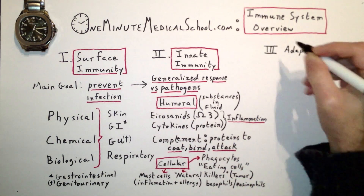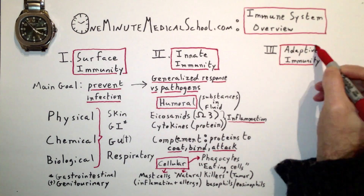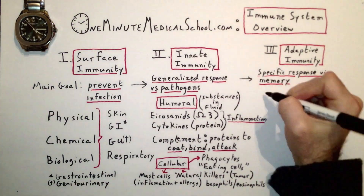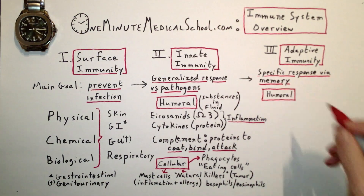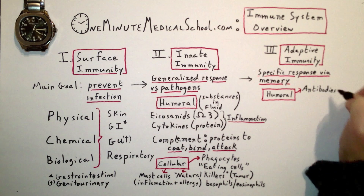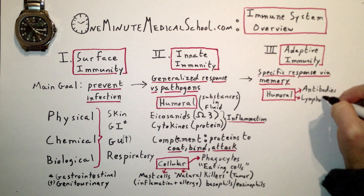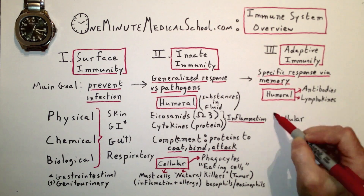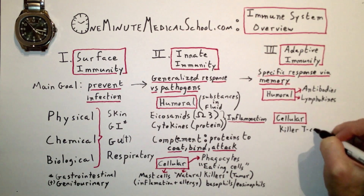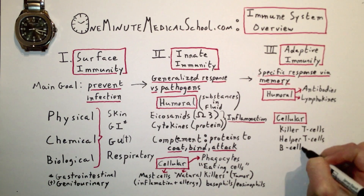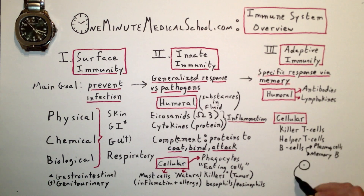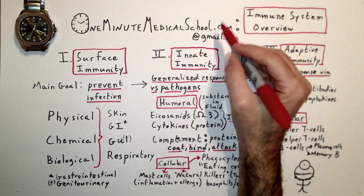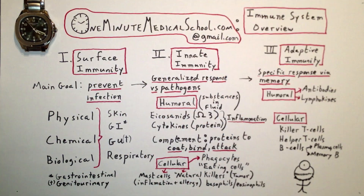The third component is adaptive immunity, where pathogens you've encountered before are remembered. Its humoral components include antibodies and lymphokines. Its cellular components include killer and helper T-cells and B-cells. Memory B-cells keep the record of what you've been exposed to.